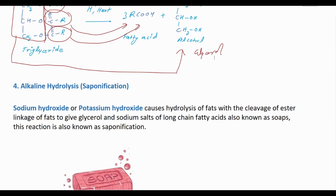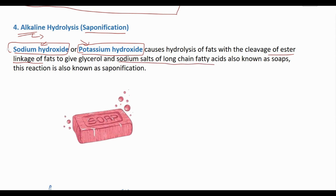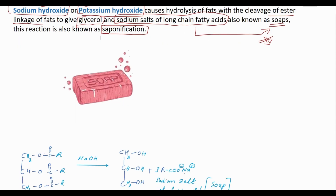Next is alkaline hydrolysis, also known as saponification. In alkaline hydrolysis, sodium hydroxide or potassium hydroxide is used as the alkali. The process of hydrolysis of fats and oils in the presence of alkali is called saponification or alkaline hydrolysis. The product will be a sodium salt of fatty acid (soap) along with glycerol.